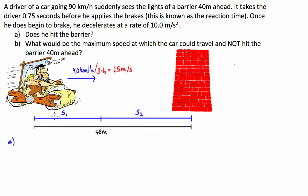Now, from here what I'm going to do is the first part, S1, is just going to be how fast he's going multiplied by the time that he drives it for, so the reaction time. So in this case, S1 is just equal to velocity times time, which in this case is equal to 25 metres a second times by 0.75 seconds. And that, guys, is equal to 18.75 metres.